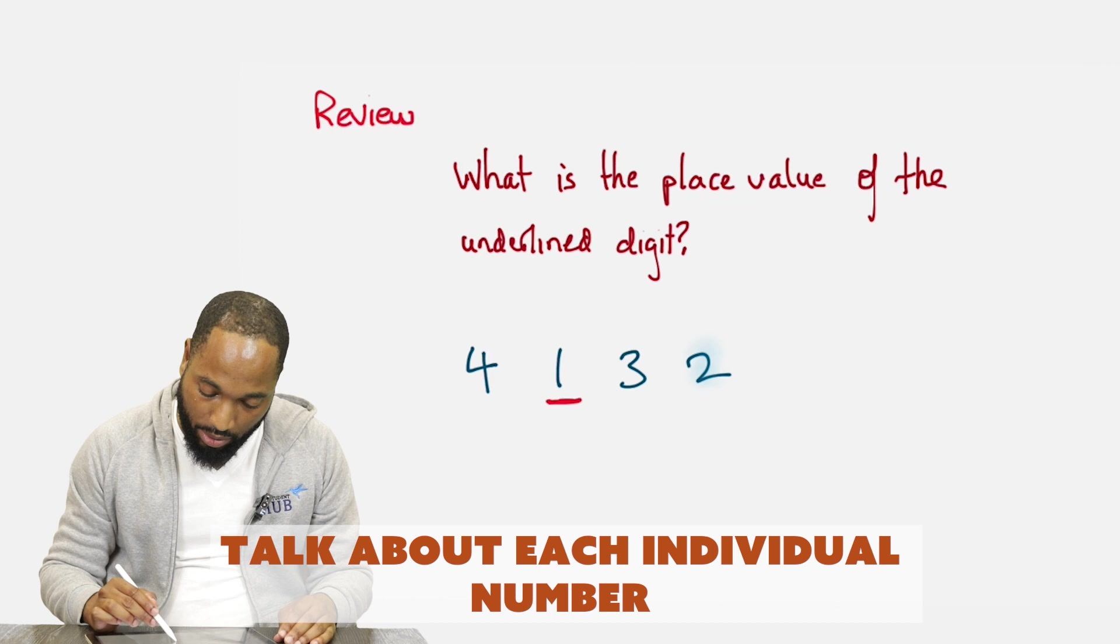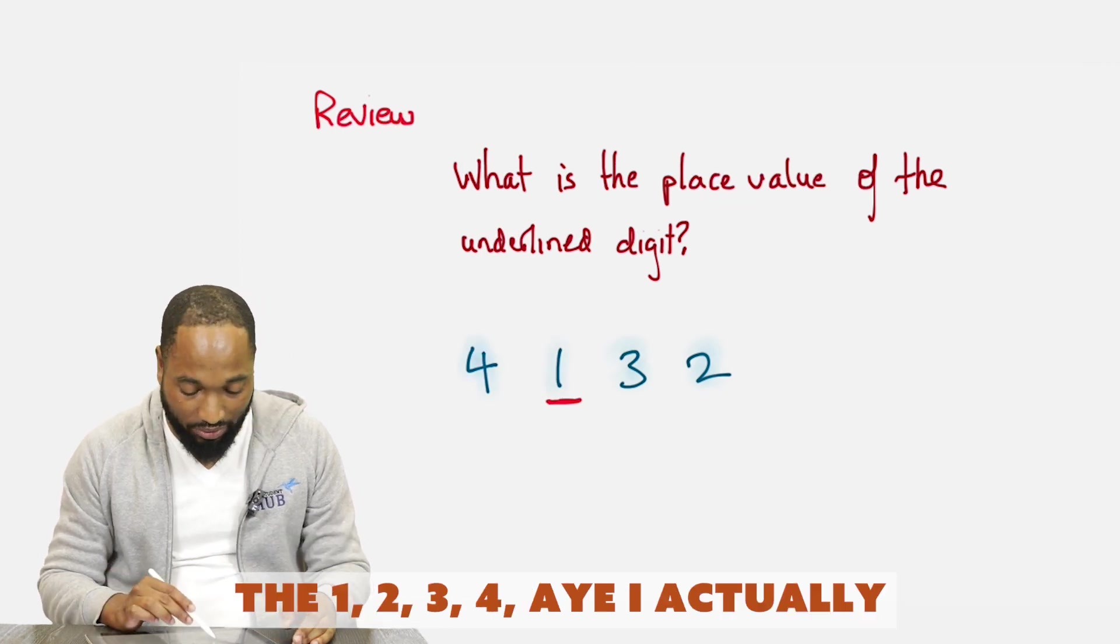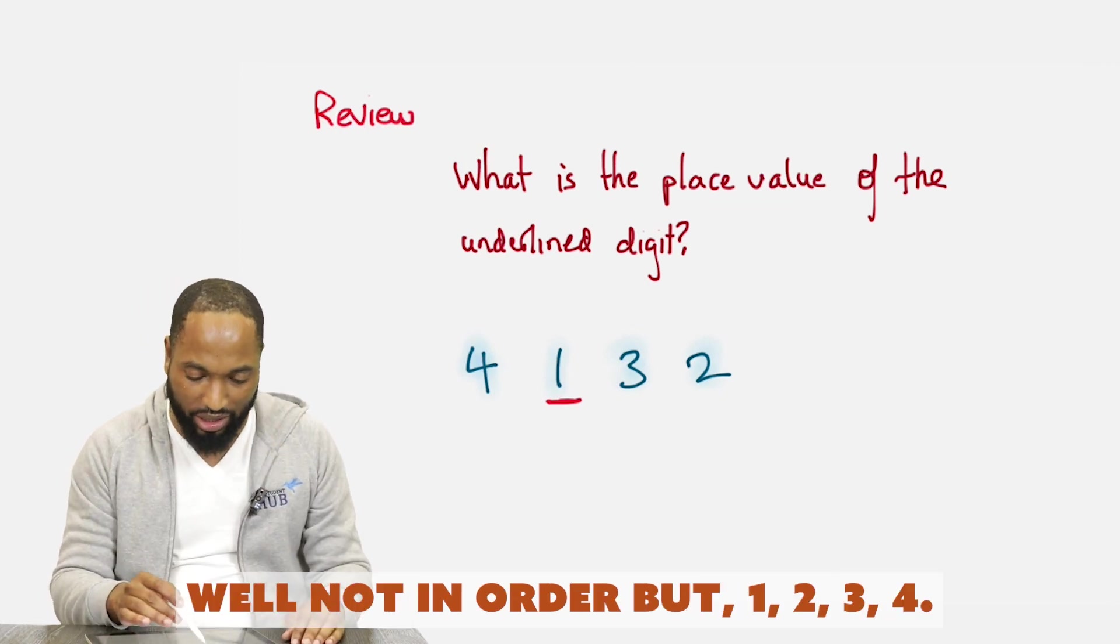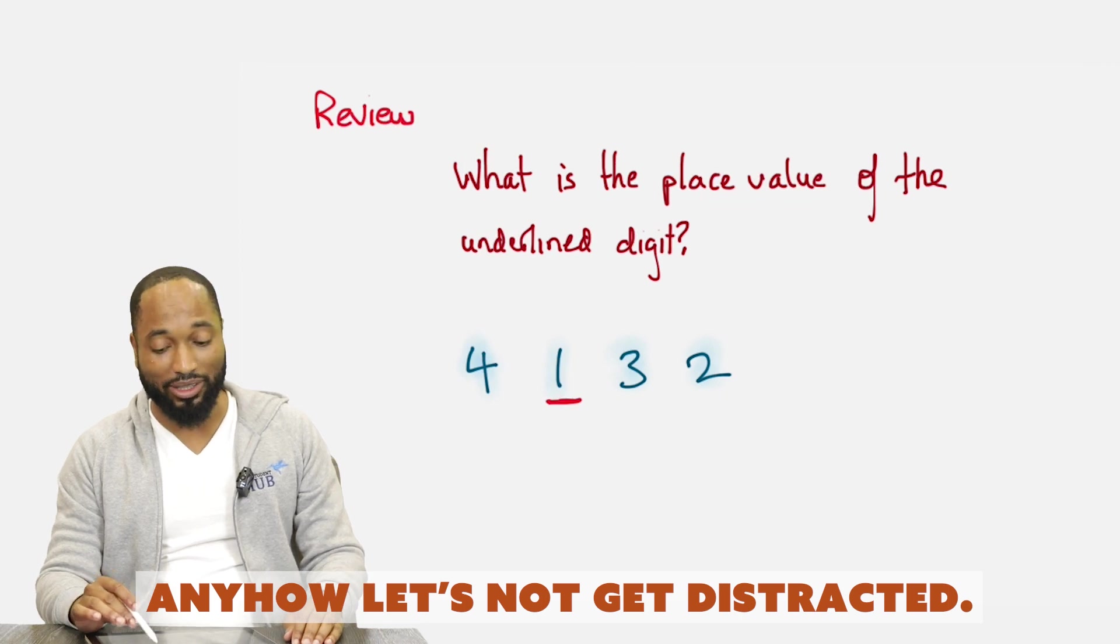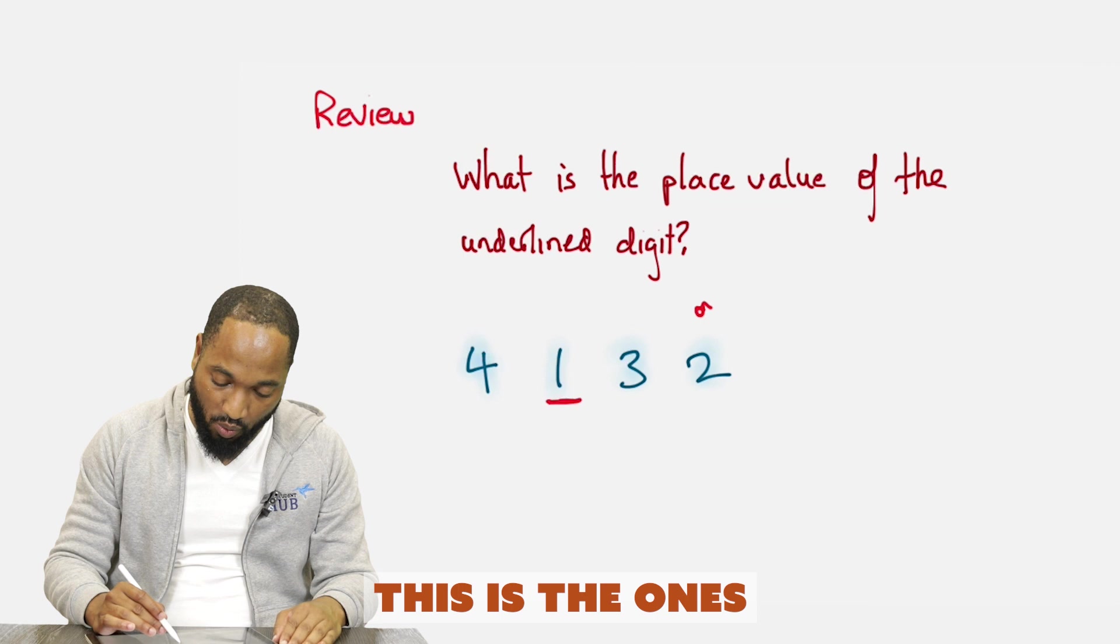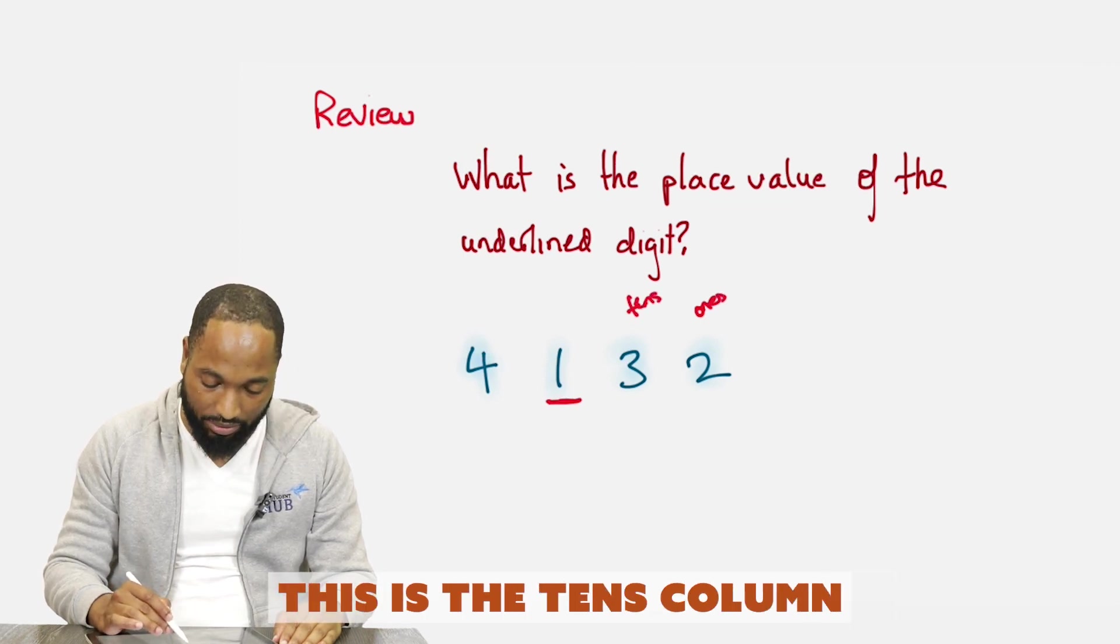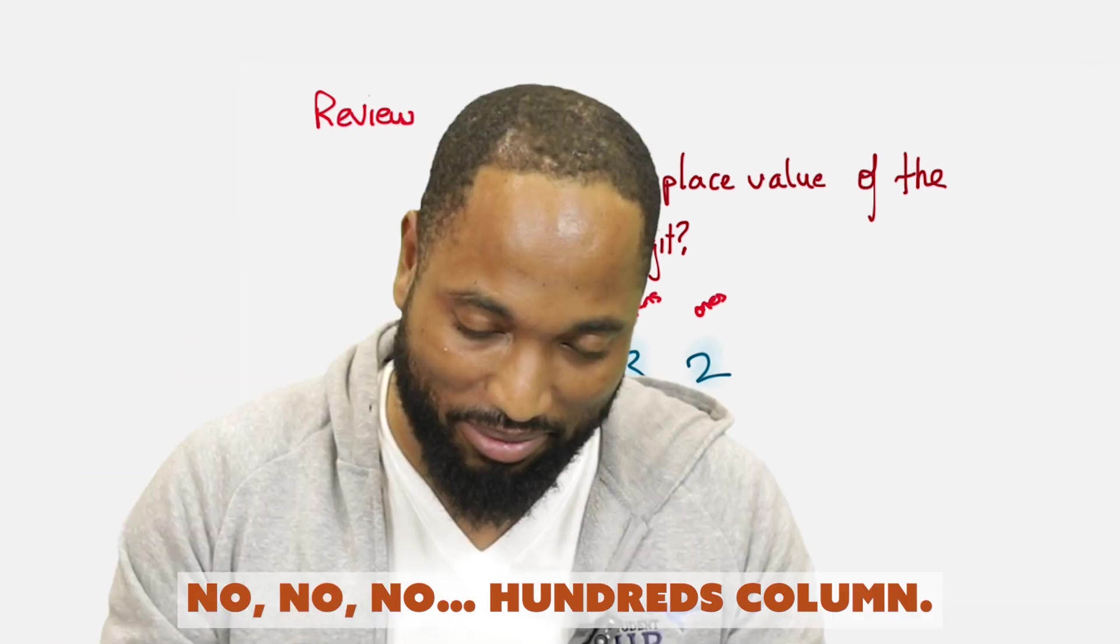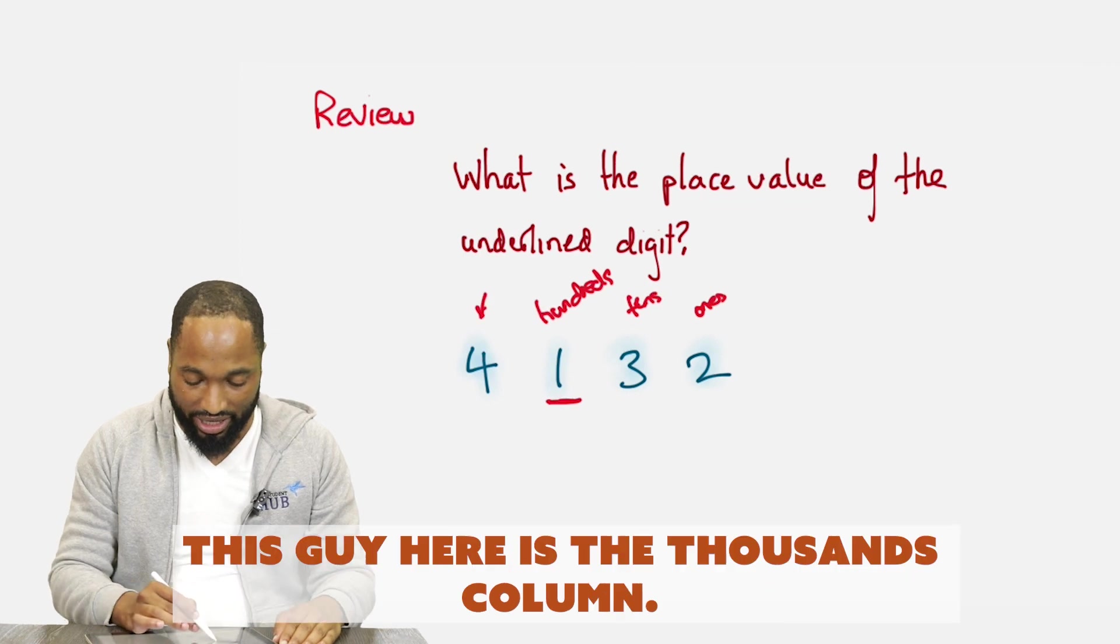Alright, so what's the place value of the underlying digit? Now the digits talk about each individual number, the 1, 2, 3, 4. Well, not in order, but anyhow, let's not get distracted. What is the place value of the underlying digit? This is the ones column, and we know that because we know that. This is the tens column, and this is the thousands column. No, no, no, hundreds column. Just checking, hundreds column. This guy here is the thousands column.